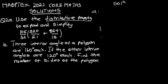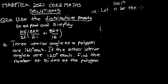Part B reads: three interior angles of a polygon are 160 degrees each; if the other interior angles are 120 degrees each, find the number of sides of the polygon. We have to find the number of sides and since we don't know it, I'm going to let n be the number of sides of the polygon.